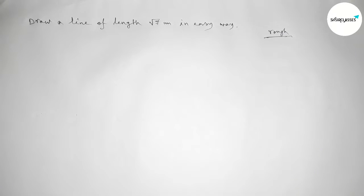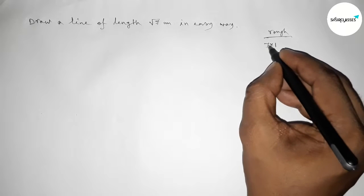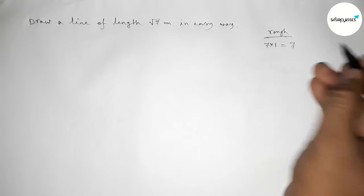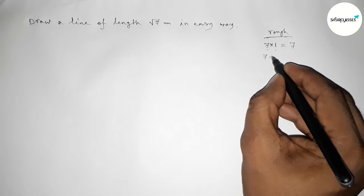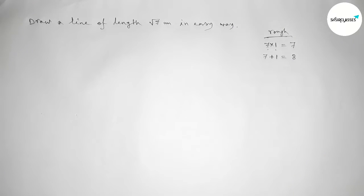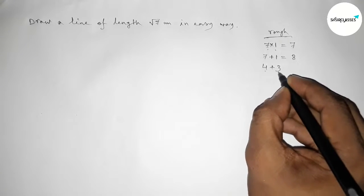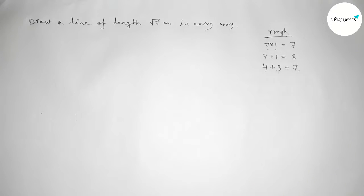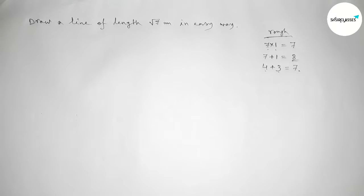First, roughly discussing some important calculation. We can write 7 as 7 into 1 equals to 7. Next, adding 7 plus 1 gives 8. We can also write this as 4 plus 3 equals 7. So first we have to draw a line of length 8 centimeter.